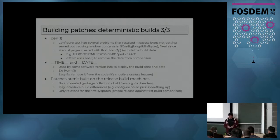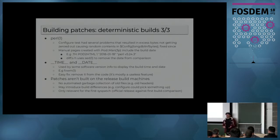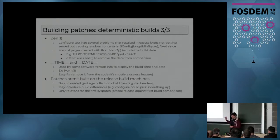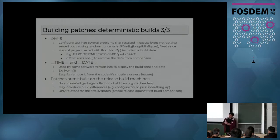Something really unexpected is that patches aren't built on the release machines. Releases are actually built by Theo; patches are built by Robert. They're not built on the same machines obviously. On OpenBSD, we don't have any automated garbage collection of old files — for example, if we remove a header, nothing will automatically remove it from the system. We realized that Theo's machine had a lot of headers that weren't cleaned up. That doesn't introduce any issue normally, but in the case of Perl, it actually picked up a different option because the header was there, and the final binary was completely different. That specific issue is only relevant for the first syspatch, since for the second one we compare to our own built release.